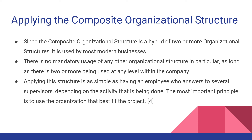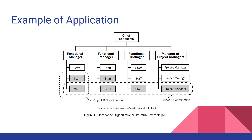On the next slide, an example will make this easier to understand. Imagine the state government Department of Transportation has a maintenance division, which seeks to maintain the level of service of the state's roads and bridges, and a capital projects division, which builds new roads and bridges. The maintenance division and the capital projects division are located side by side, reporting to the executive. This is a composite organizational structure.